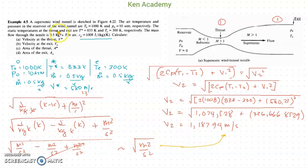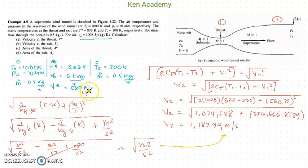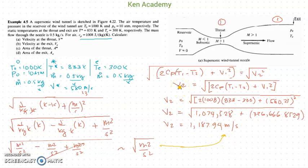So this is our solution for the velocity at the exit. We know it is correct because the figure indicates that the Mach number is greater than 1, so the exit velocity must be greater than the speed of sound, which equals the throat velocity of 580 m/s. Since we got 1,187.94 m/s, the exit velocity is indeed greater than the throat velocity.